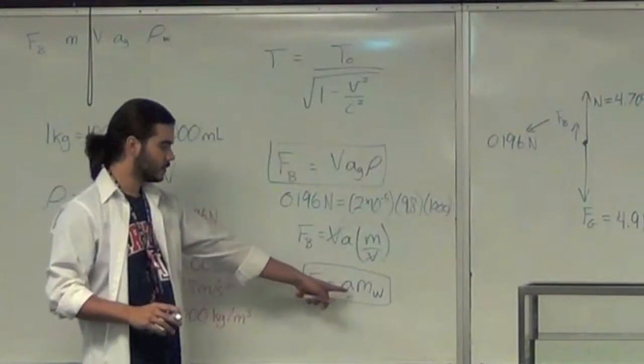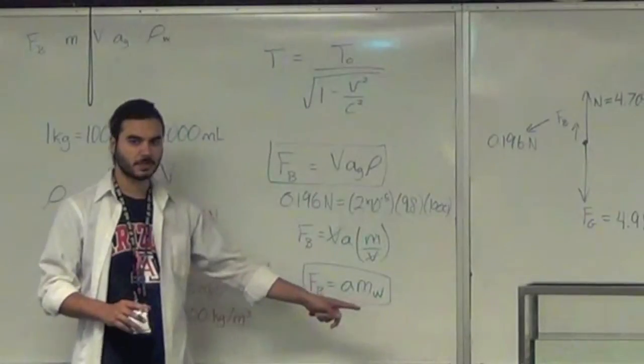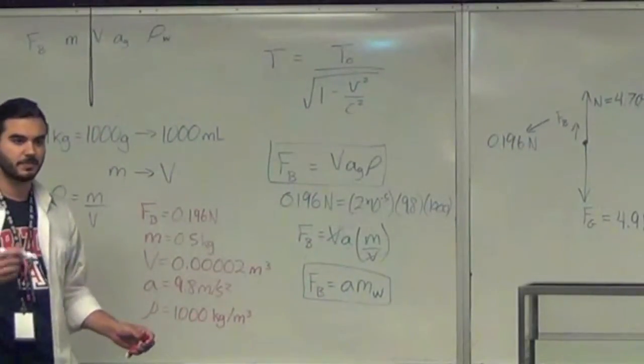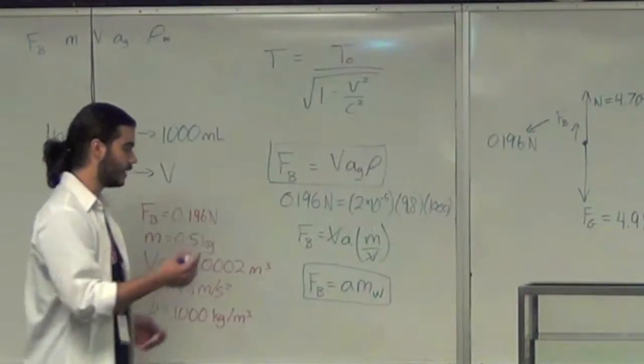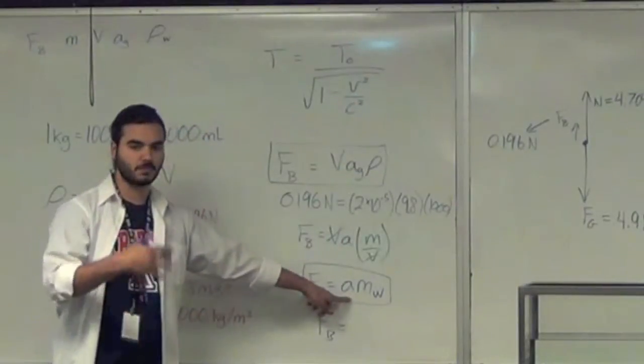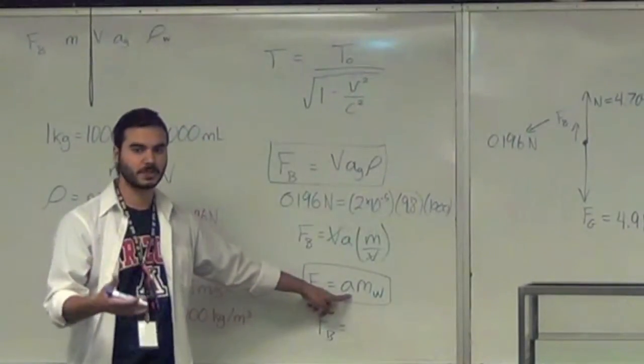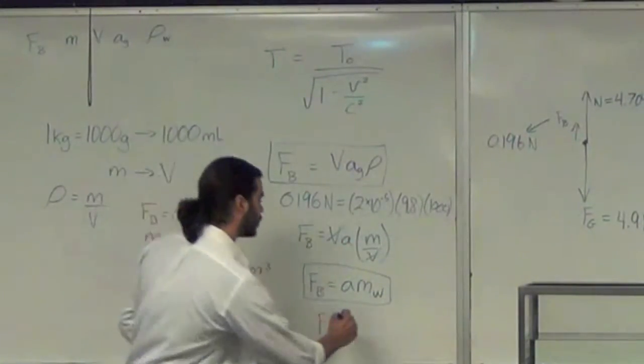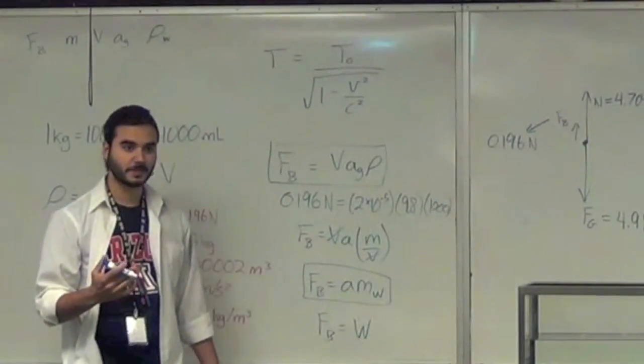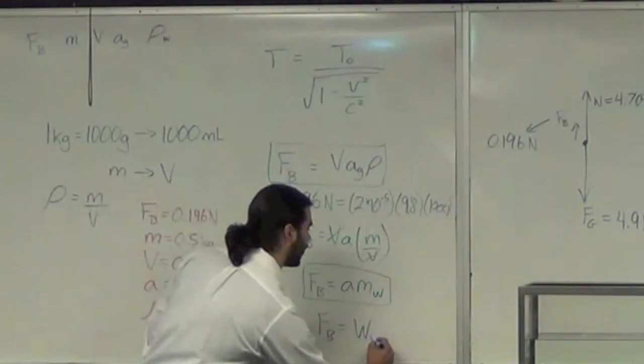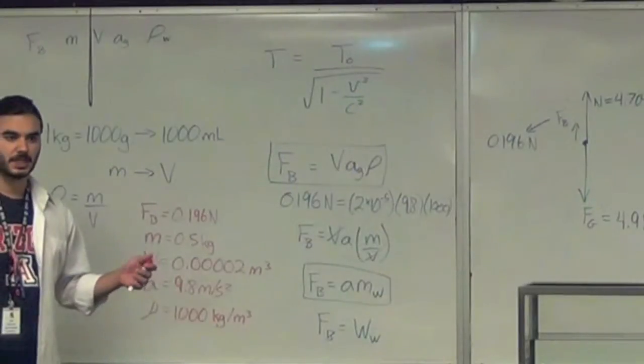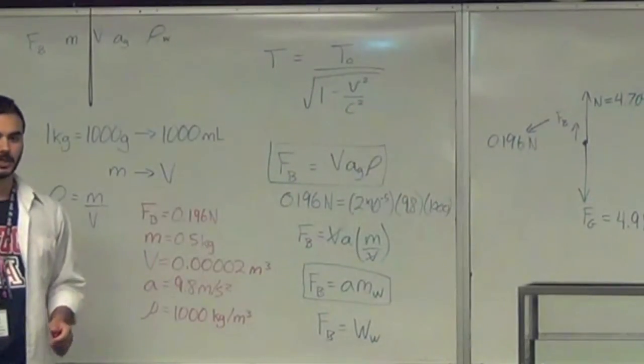So, that's another way to write it. Does this look familiar to you? Acceleration times mass? Mass times acceleration? That's the force due to gravity. Force due to gravity is mass times the acceleration due to gravity. So, you could also say the buoyancy force is equal to, this is weight, right? The force of gravity is weight. This is equal to the weight of what? Water. The weight of the water displaced. That is Archimedes' principle. Archimedes' principle says that the buoyancy force is equal to the weight of water displaced.